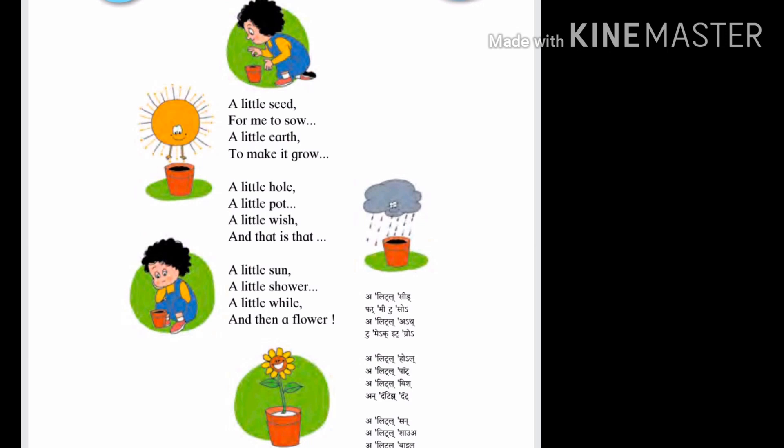You can see in the picture how the little child is trying to sow seeds for growing a plant. A little hole, a little pot, a little wish and that is that.